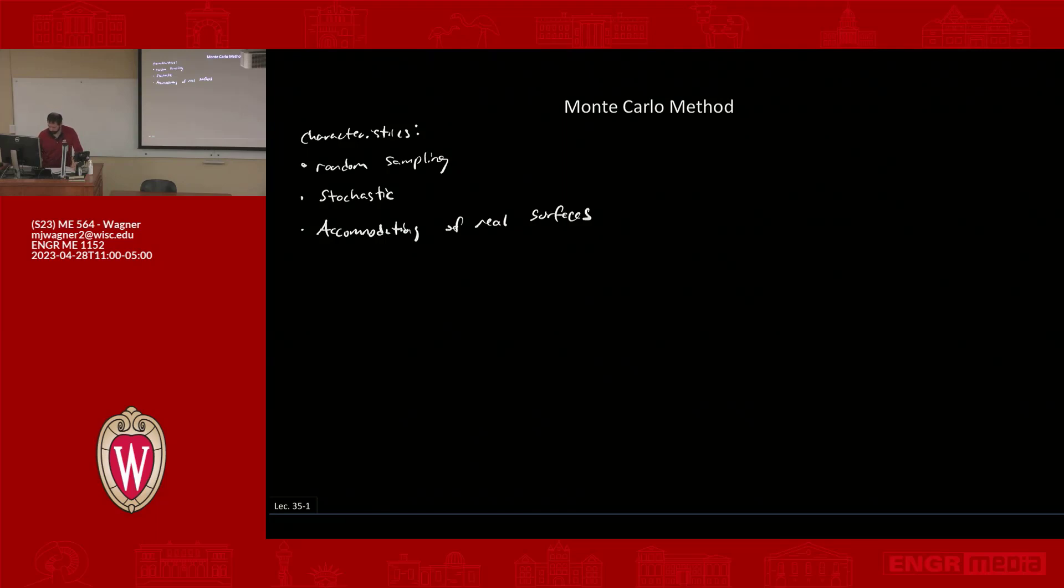So I already kind of talked through the method, but I'll just write it down for you so we have it again. I have about five steps here. One is randomly select a location on the emitting surface. So let me just sketch this out while we're doing it. So here's my emitting surface. I'm going to randomly pick some coordinate. Let's pick that coordinate here.